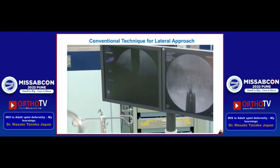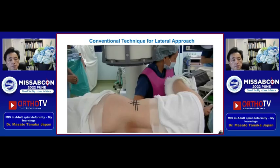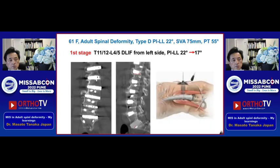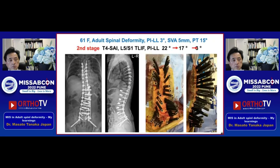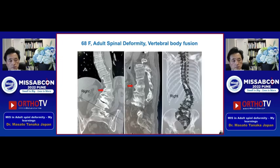If you perform this kind of surgery, long-term use of a sheath is necessary. This is a 61-year-old female with severe ASD. The first stage surgery was a lateral approach, and the second surgery was percutaneous pedicle screw fixation. This kind of ASD has fused vertebrae — if you look at the CT scan, several vertebrae were fused.